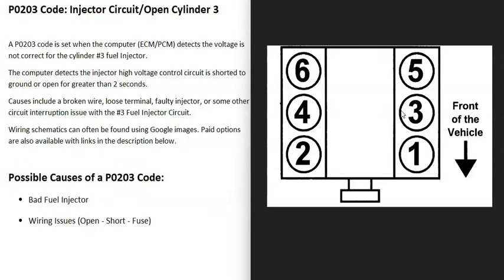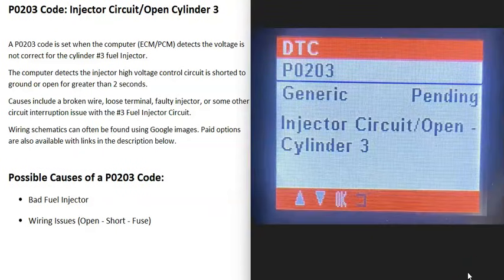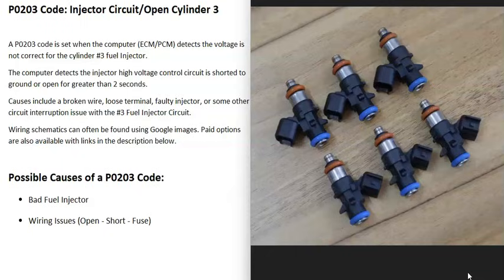What are some possible causes of a P0203 code? The first thing that could cause this is a bad fuel injector on cylinder number three. That fuel injector might have just gone bad and needs to be replaced.